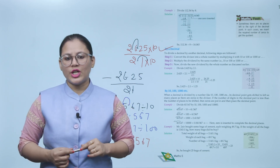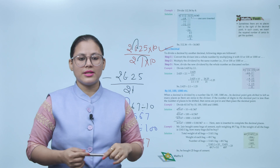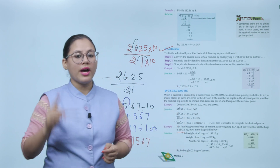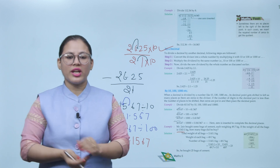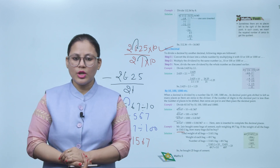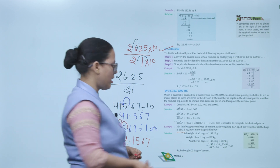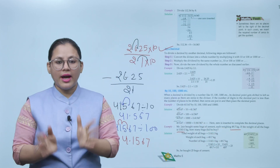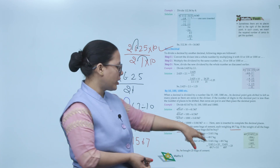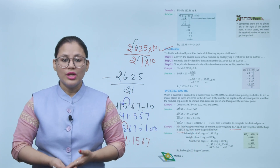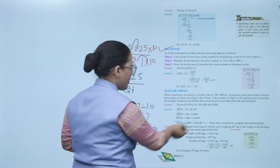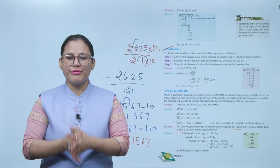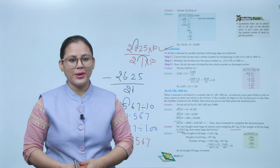Word problem: Mr. Jain bought some bags of cement, each weighing 49.7 kg. The total weight of all the bags is given. How many bags did he buy? Simply divide the total weight by 49.7 kg and you will get the number of bags of cement.